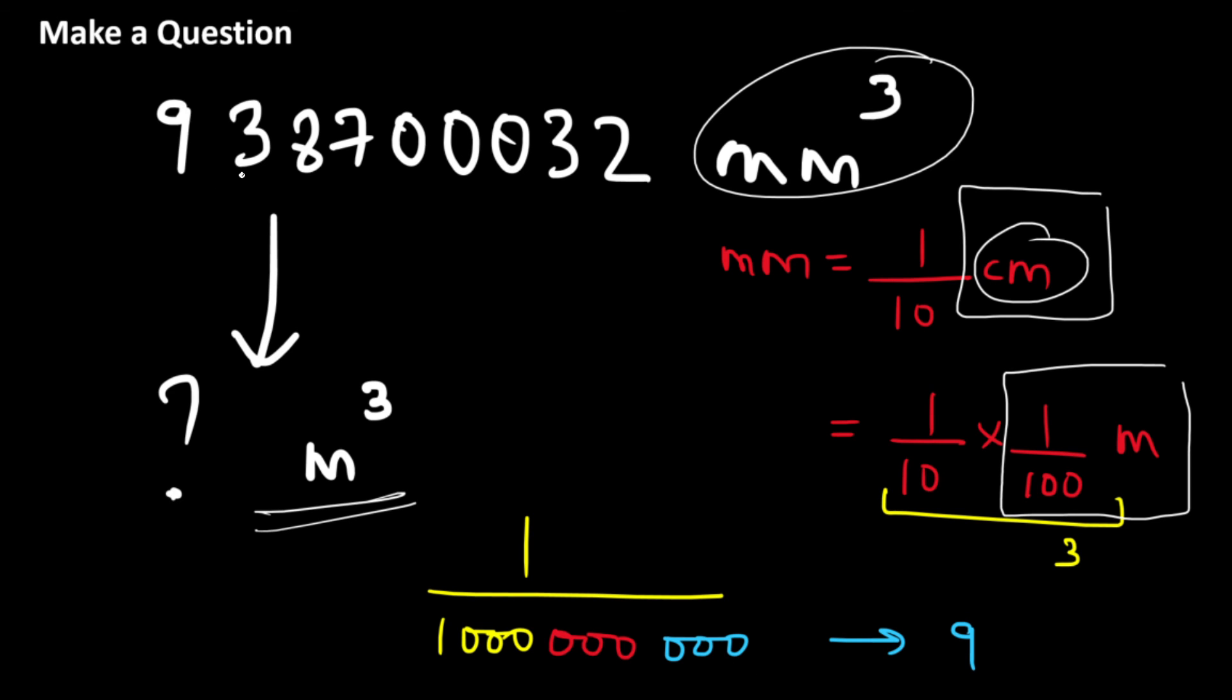Now, remember the decimal point in this number over here is over here. So if you are multiplying this with 1 by 10 to the power 9, this is nothing but 10 to the power 9. You just need to move this decimal point by nine places. So that's 1, 2, 3, 4, 5, 6, 7, 8, and 9. So the answer to this becomes 0.938700032 meter cube.